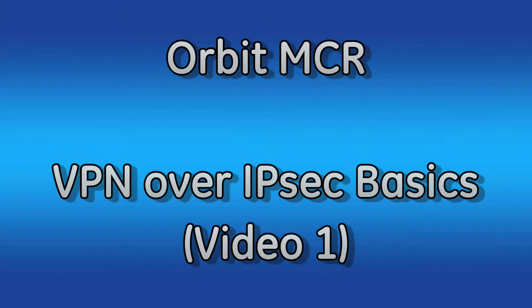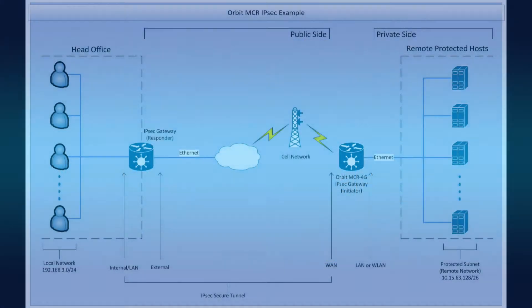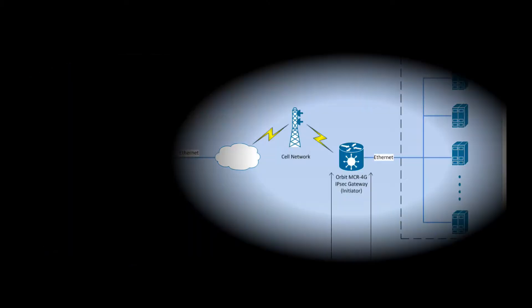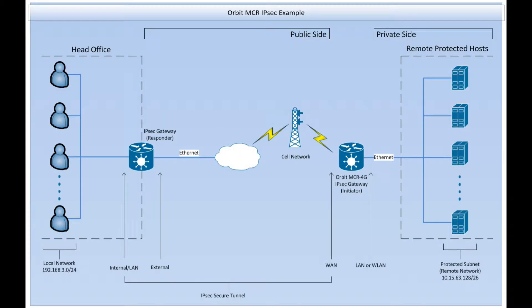Before we get into the configuration of IPSec on the Orbit MCR, let's talk about why we would want to use IPSec. Let's say we have a local office that needs to reach a remote location which has an Orbit MCR with 3G or 4G. One way to connect would be to use port forwarding, but this method requires port forwarding rules and can cause complications. Additionally, the data being transmitted to the remote site is not secure. This is where a secure IPSec tunnel will come in handy.